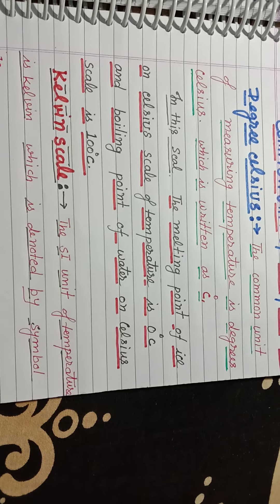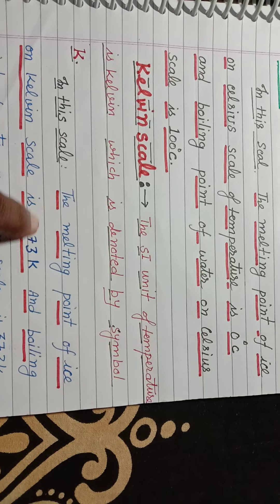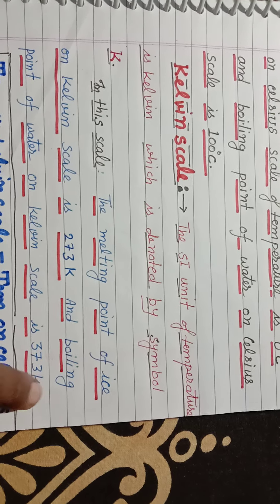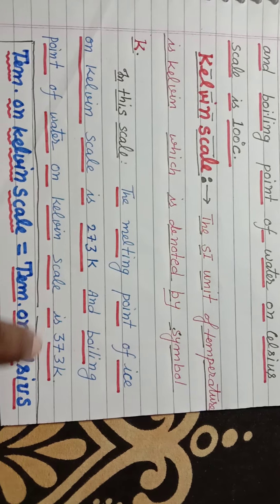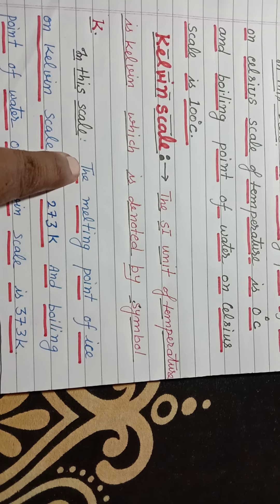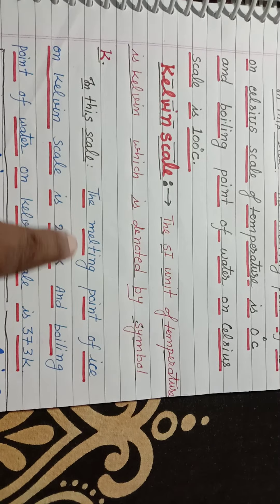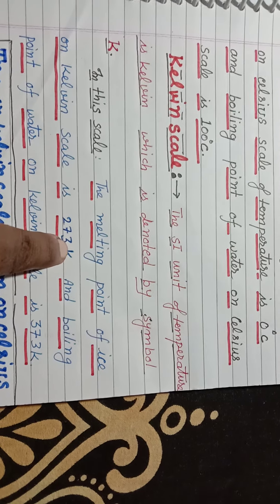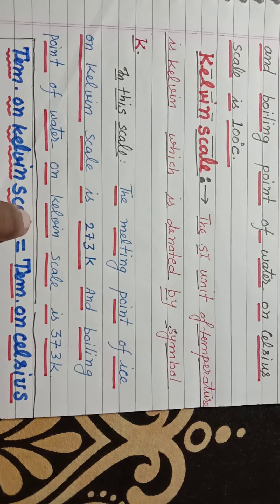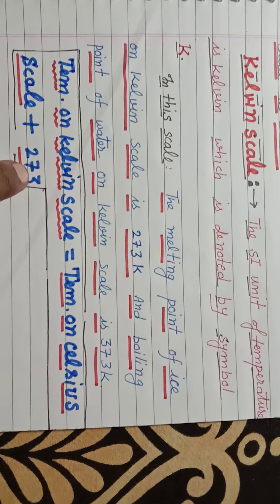On the Kelvin scale, the melting point of ice is 273 Kelvin and the boiling point of water is 373 Kelvin. Temperature on Kelvin scale equals temperature on Celsius scale plus 273.